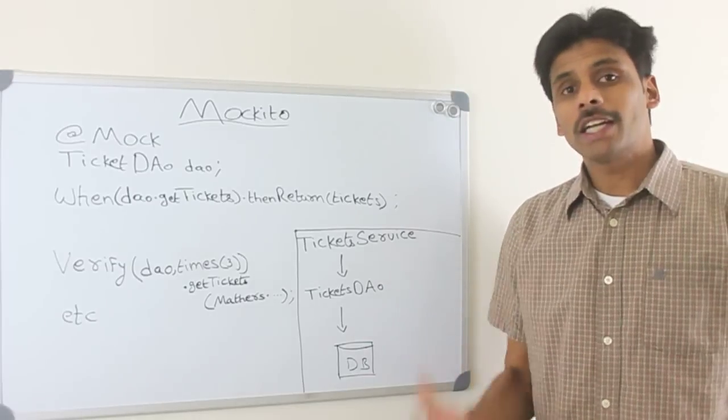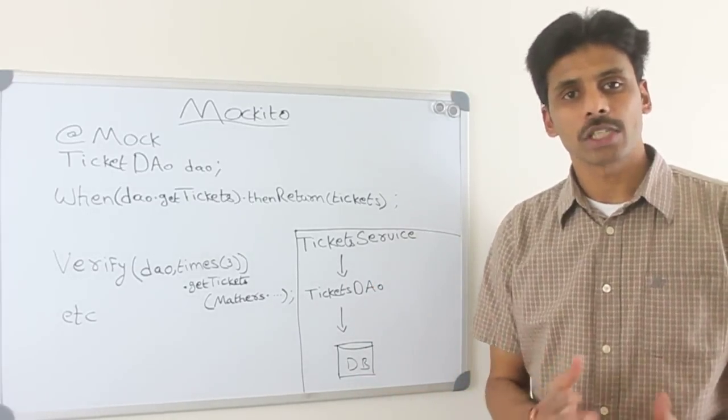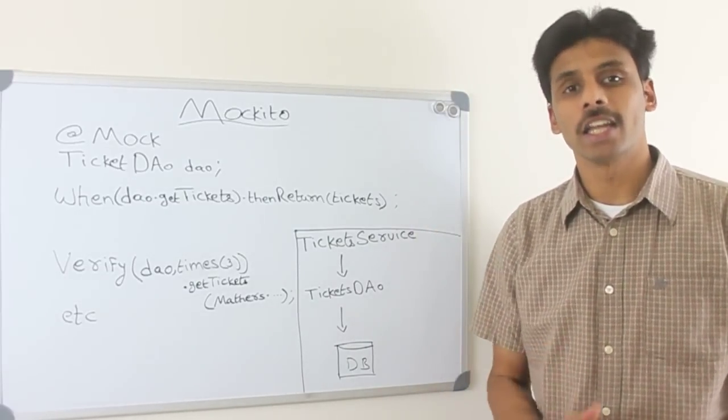And when you are unit testing these classes, we will not test them end-to-end. So if class A uses class B, and when you write a unit test, you are going to test class A in isolation.